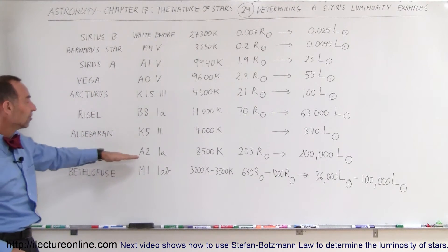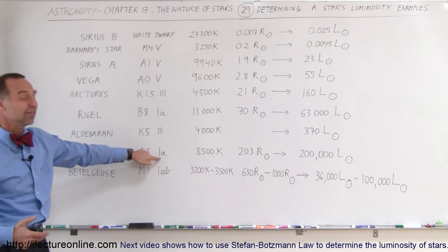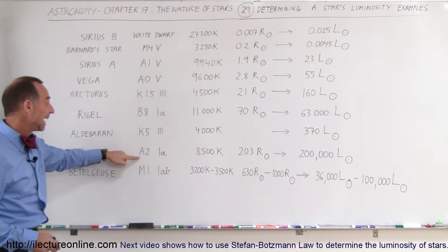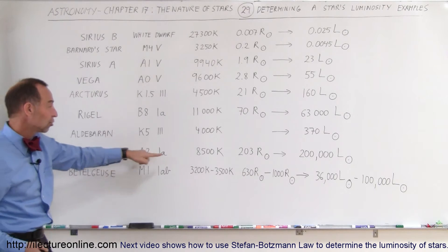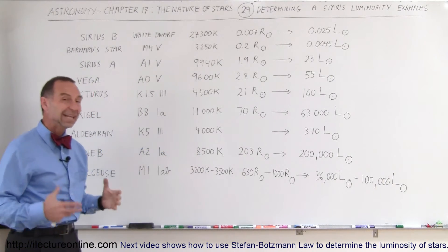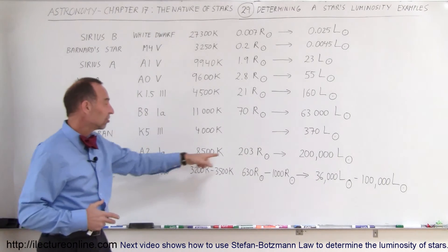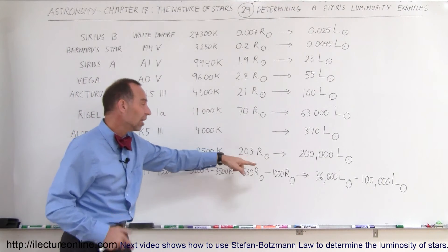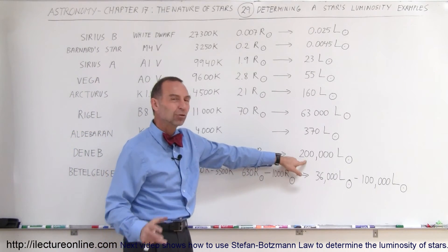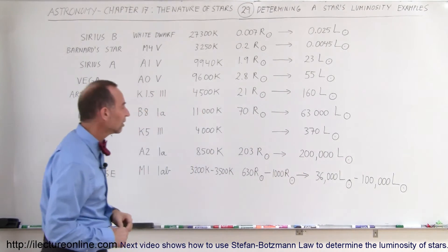Deneb is a very bright star, it's an A2-1A. 1A means it's a very luminous giant. A2 means it has a very high surface temperature, about 8,500 Kelvin. It is an enormous star in size, it's 203 times the radius of the Sun, and therefore a luminosity of about 200,000 times the luminosity of the Sun.